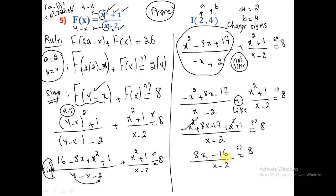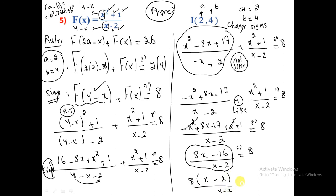We need to get a constant equal to 8. Taking common factor 8: 8(x-2)/(x-2) = 8. The (x-2) terms cancel, giving 8 = 8, which is true. Therefore I(2, 4) is a center of symmetry.